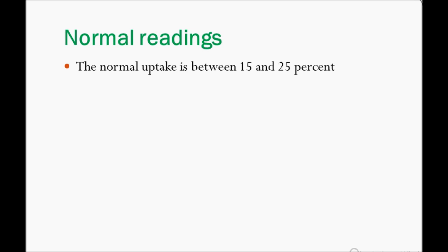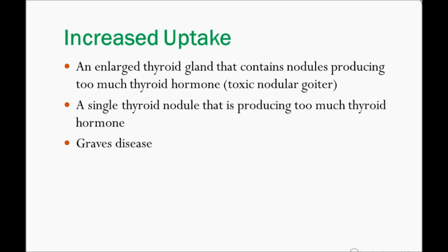Now the findings are very important. The normal uptake is 15 to 25%. Increased uptake is seen in toxic nodular goiter — if there is a single nodule producing a high amount of thyroid hormones, uptake will be increased.